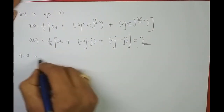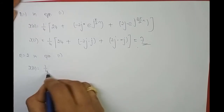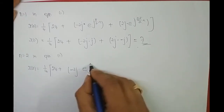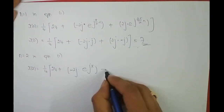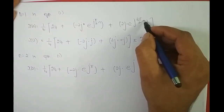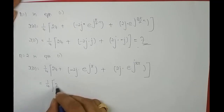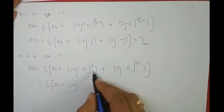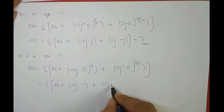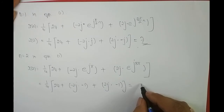Putting n = 2 in Equation 1: x[2] = 1/4 × [24 + (−2j)·e^(jπ) + 2j·e^(j3π)]. Now e^(jπ) = cos(π) + j·sin(π) = −1, and e^(j3π) = cos(3π) + j·sin(3π) = −1. Substituting and simplifying gives x[2] = 6.